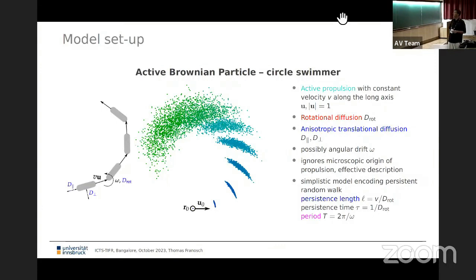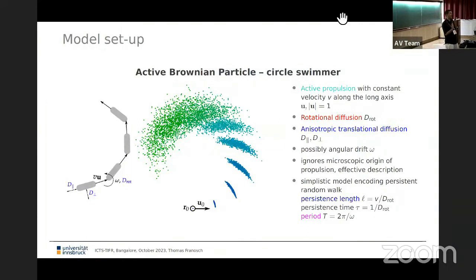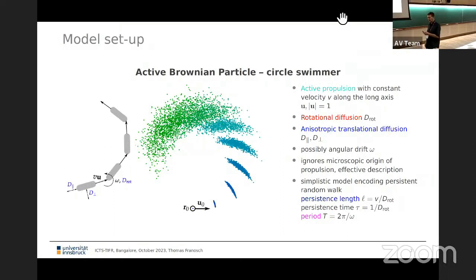This model ignores any microscopic origins of the propulsion, angular drift, or translational diffusion — it is a simplistic model. By dimensional analysis, there is a persistent time scale tau_rot = 1/D_rot, the time scale where you go along a circular arc rather than straight. From this you can derive a persistence length, and the new parameter introduced by omega gives T, the period needed to complete a full circle.